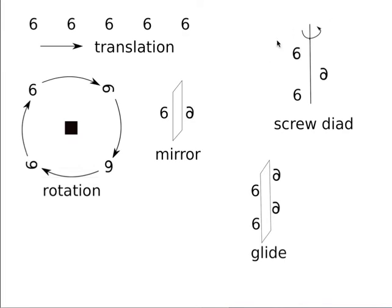Today I am going to neglect glide planes and screw axes, which include translations, because these translations are quite small - a fraction of a repeat distance. When we look at macroscopic properties and the macroscopic shape of a crystal you do not pick up these translations. I am going to examine all the symmetry elements passing through a point in an object, and obviously if they pass through a point there are no translations.